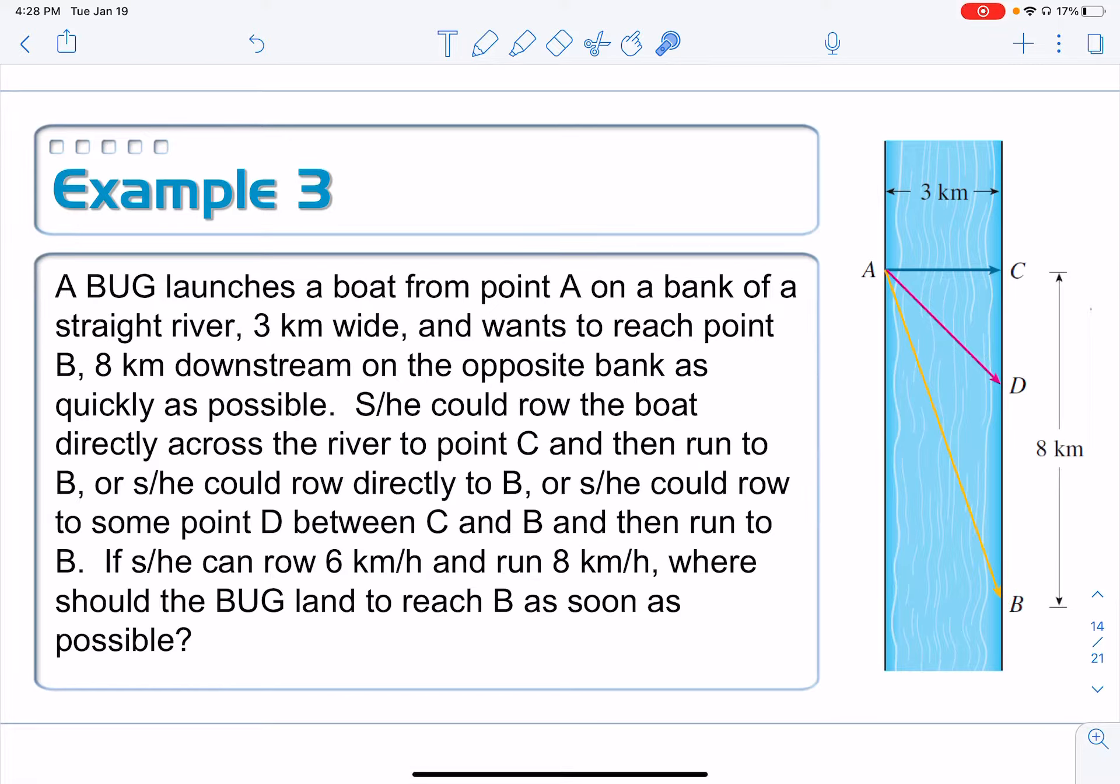She could row the boat directly across the river to point C right there, and then could run all the rest of the way down the bank to point B. That's one option. Another option is the bug could row all the way downstream directly to B and not have to run at all, or a compromise between those two, rowing from A to some point in between C and B. We'll call it D right there, and then running the rest of the way.